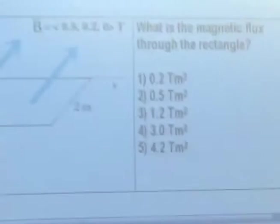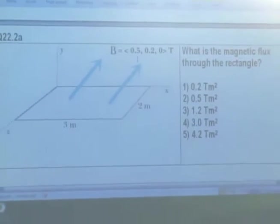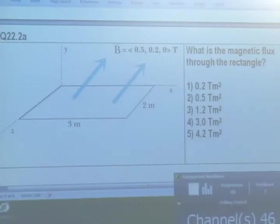Here's a surface, 3 meters by 2 meters. Here's a magnetic field that has an X component of 0.5, Y component of 0.2, Z 0, Tesla. What's the magnetic flux? Just finding the flux. Just a little review here.